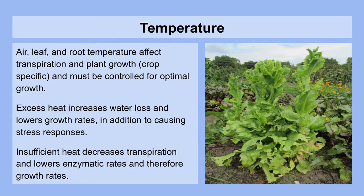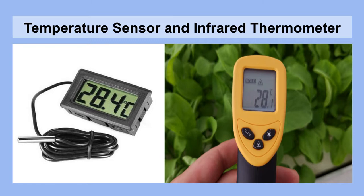Next, we'll talk about temperature. Air, leaf, and root temperature all affect transpiration and plant growth, and they must be controlled for optimal growth. Excess heat increases water loss and lowers growth rates in addition to causing stress responses, such as bolting and tip burn in cool-weather crops. Insufficient heat decreases transpiration and lowers enzymatic rates in plants and can dramatically slow growth rates and make crops no longer on schedule. To measure temperature, you have temperature sensors designed for the air and the root zone, and you also have infrared thermometers, which are very handy in determining what the temperature of the foliage is. Healthy crops that are using water from their roots to cool themselves will have a lower leaf temperature than the surrounding surfaces around them.